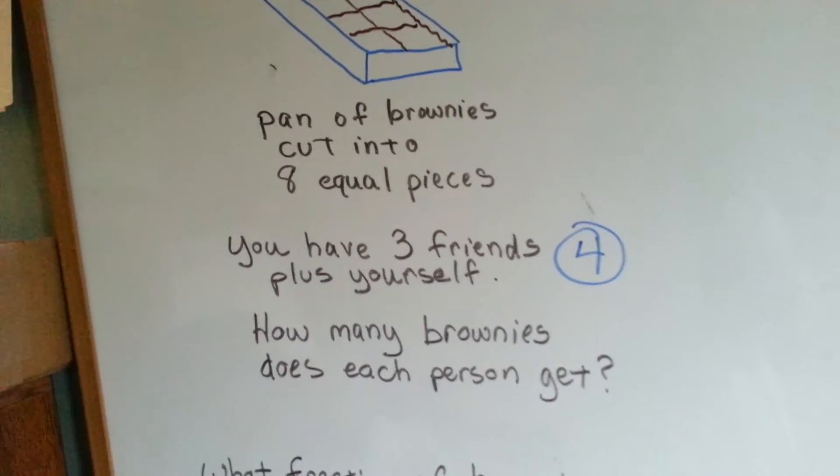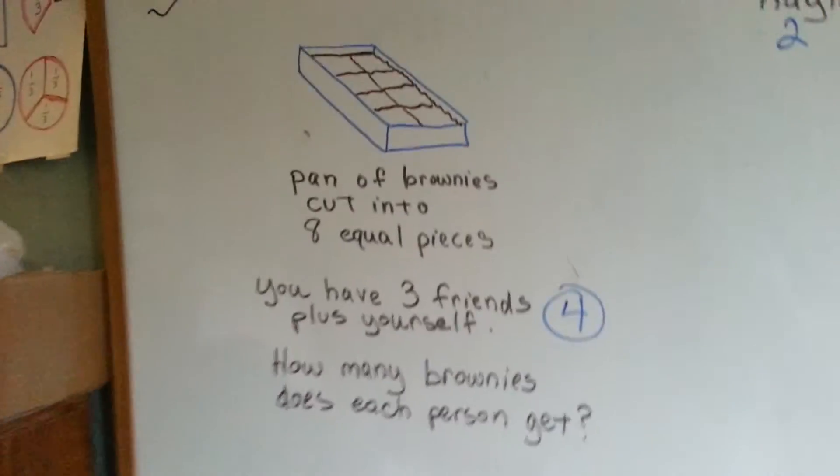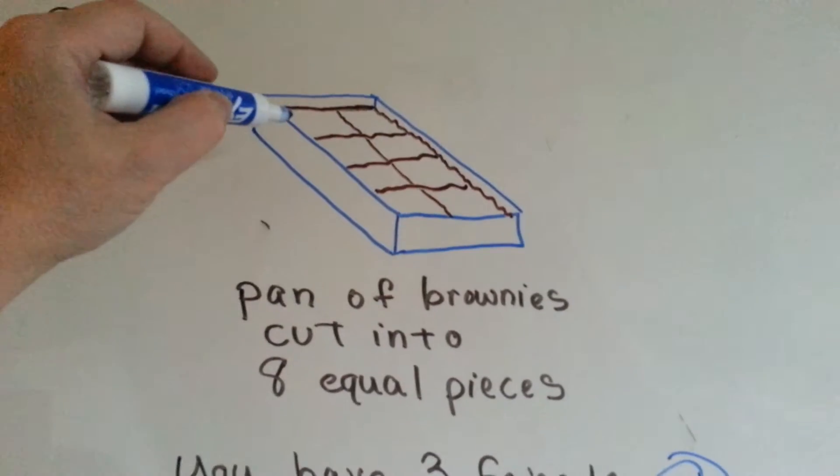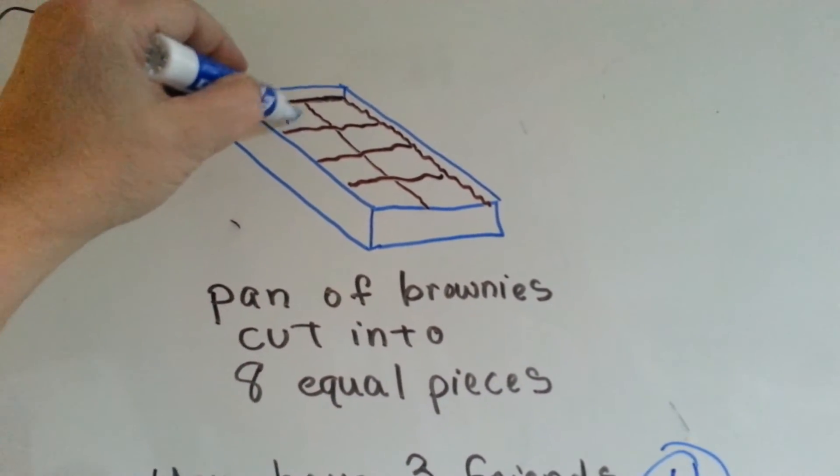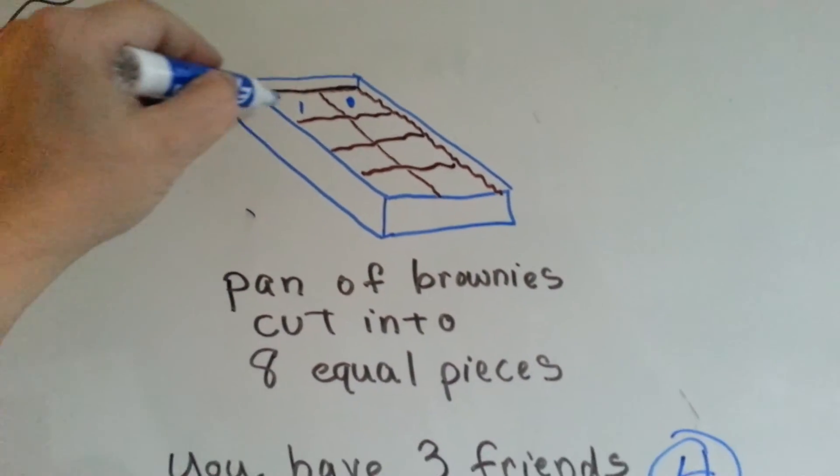So you need to split the eight brownies in this pan between four people. So how many brownies does each person get? Well, look. We'll give this one to you and this one to you.